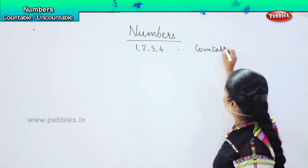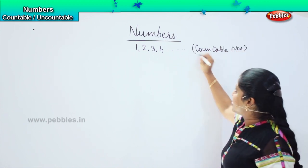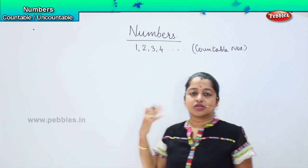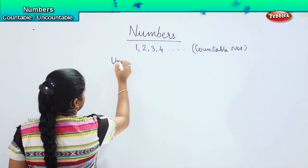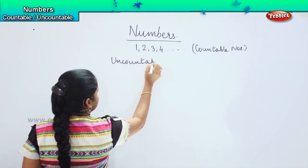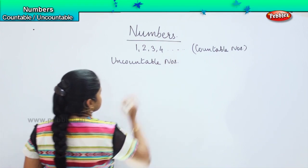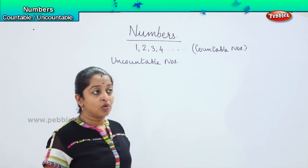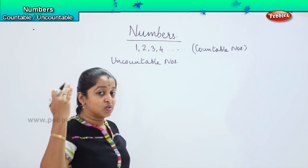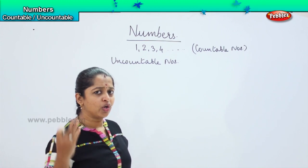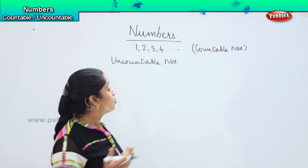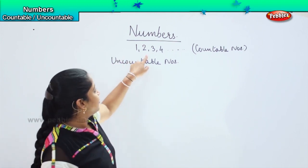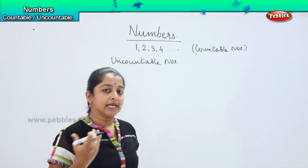What do you mean by countable numbers, children? Countable numbers means those numbers which can be counted easily using our fingers or with our minds. They are something which is not very tough to count. When I say uncountable numbers — uncountable numbers means those numbers which cannot be counted easily. For example, if I say million or trillion, we will actually struggle — we will think, what do you mean by trillion, what do you mean by billions? So those numbers are called uncountable numbers, which we cannot count easily using our fingers or our mind.